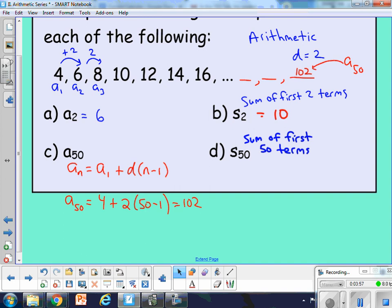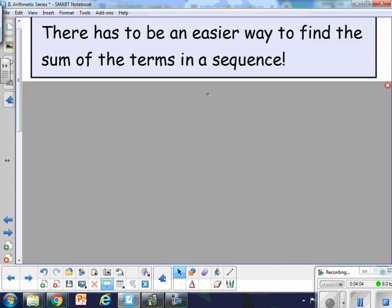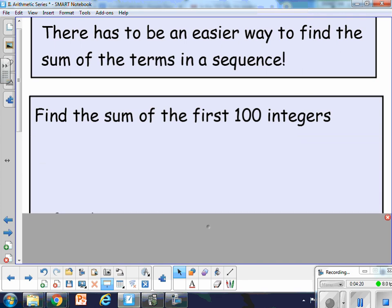So in order to think about how that works, I want to think about a classic example where we want to find an easier way. The example I want to use, this is a classic problem from an old mathematician, Gauss, who supposedly was asked to do this as a student back in school, and he came up with this nifty way to do it, and his teachers were all stunned by how smart he was. But here's kind of how it works.